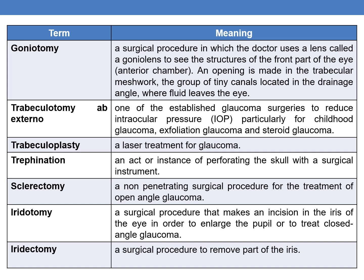The next term is iridotomy. It is a surgical procedure that makes an incision — otomy means opening or incision — in the iris of the eye in order to enlarge the pupil or to treat closed angle glaucoma. The next term is iridectomy. Ectomy means surgical removal. Iridectomy is a surgical procedure to remove part of the iris.